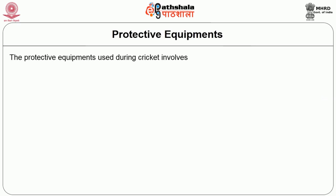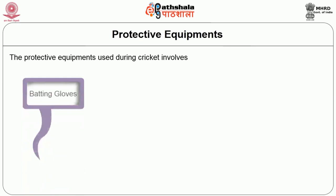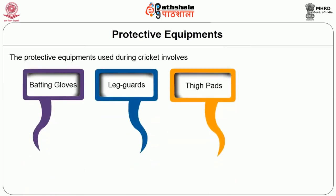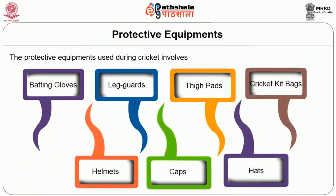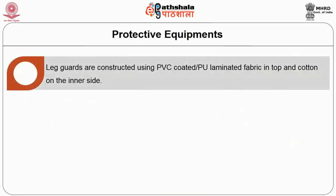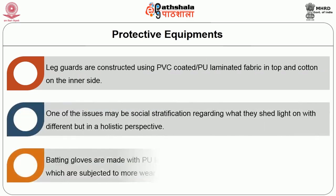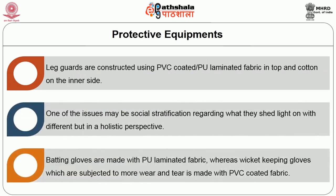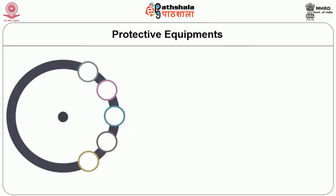Protective equipment is used during cricket, involving batting gloves, leg guard, thigh guard, cricket kit bags and helmets. These are constructed using PVC coated PU laminated fabrics on the top and cotton on the inner side. Batting gloves are made with PU laminated fabrics, whereas wicket keeping gloves, which are subjected to more wear and tear, are made with PVC coated fabrics. Cricket protective gear has huge demand in the domestic market.